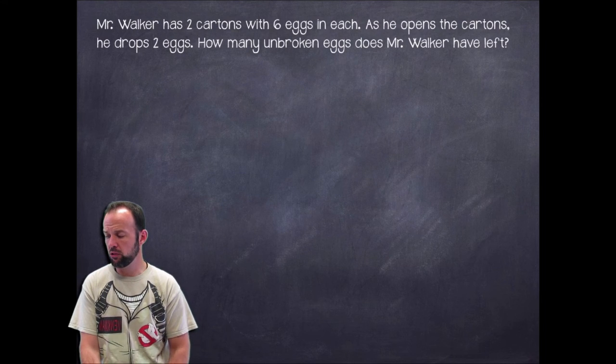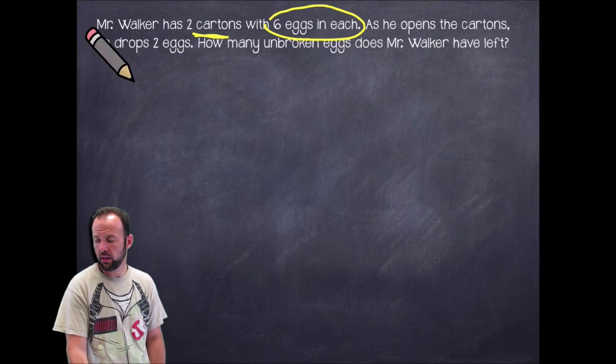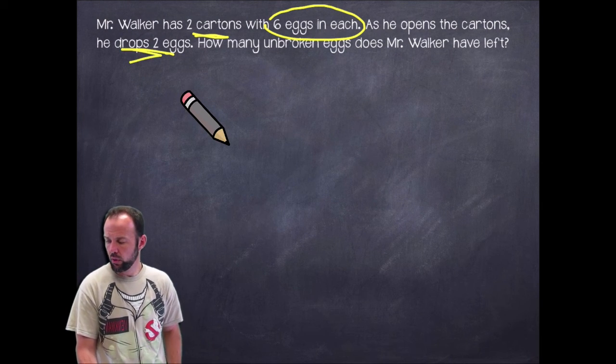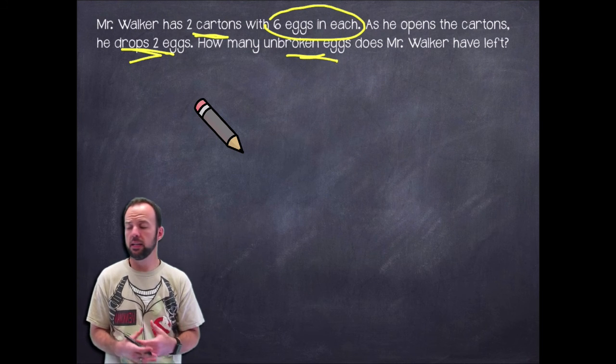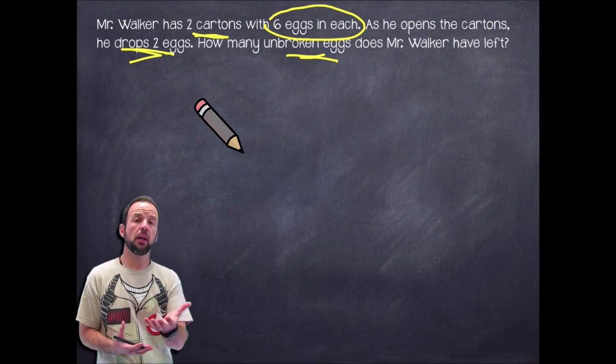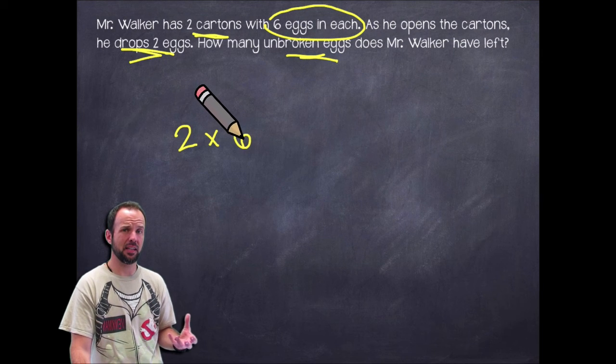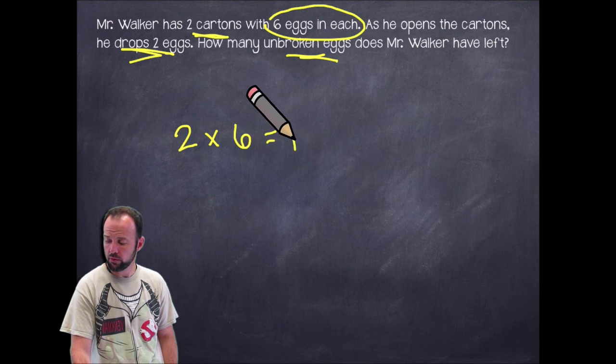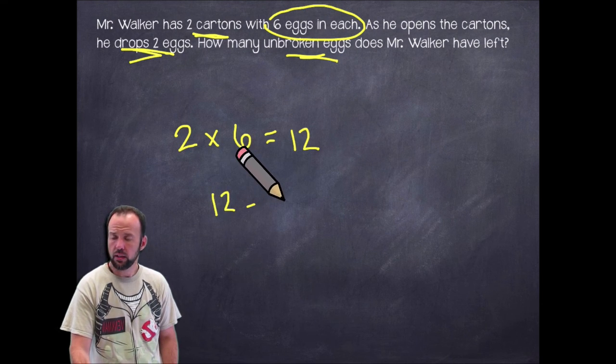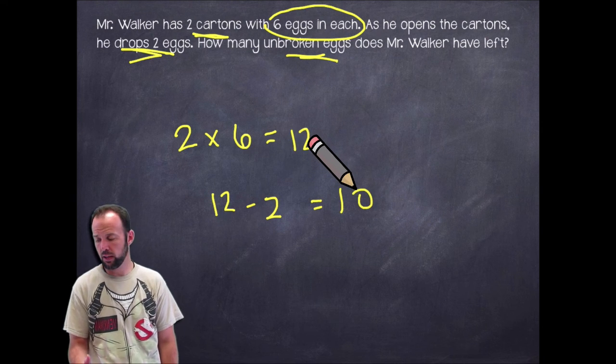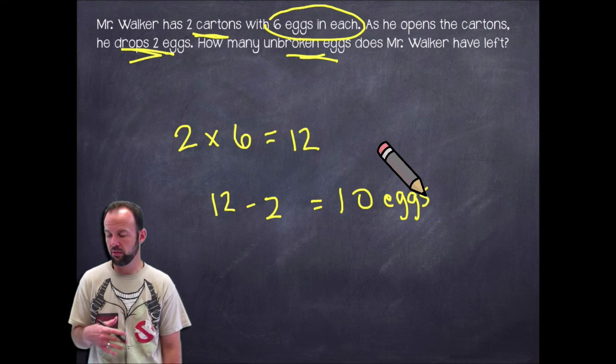Let's go ahead and underline some of this important information here. So again, we had two cartons and six eggs in each carton. I got a feeling that's probably going to be important. And as I open it, I dropped two eggs, which means I lost two eggs. So how many unbroken eggs does Mr. Walker have left? Well, if I was going to think about this, first of all I got to find out how many eggs I was starting with. So I was starting with two cartons, six eggs in each carton. Well, I could do multiplication to help me find that. So I have two cartons times six - two times six, there's six eggs in each carton, I'm going to do that two times. That's going to give me a total of 12. So I started out with 12 eggs. That's awesome. Then I dropped two of them. So I had those 12 eggs, I dropped two of them. So now that's going to leave me with 10 eggs. So I have 10 eggs left to make omelets or pancakes or whatever it is I'm making. I got 10 eggs left. So that's cool.